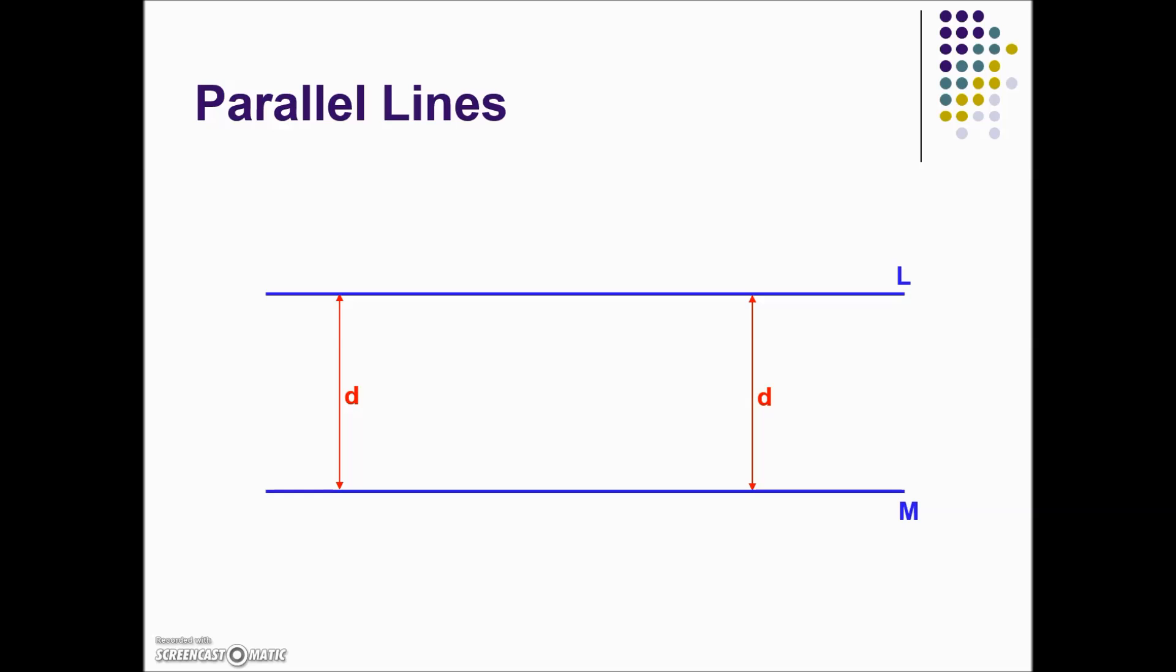Parallel lines are straight lines that are the same distance apart. This diagram shows that lines L and M are parallel to one another. When two parallel lines are crossed by a third line called a transversal, there are eight angles formed. Four here and four down here.